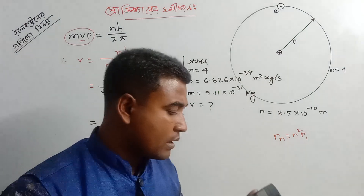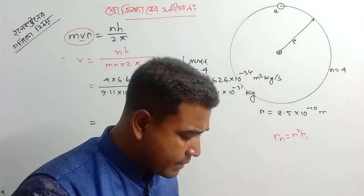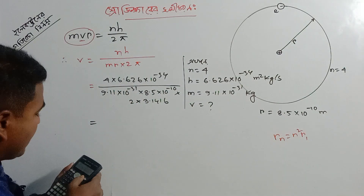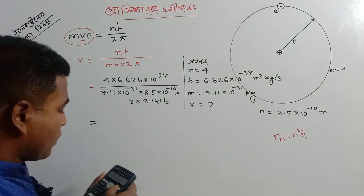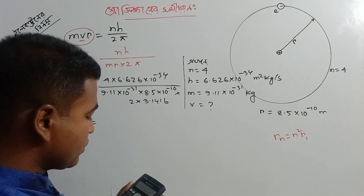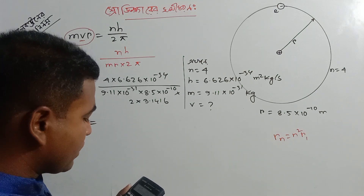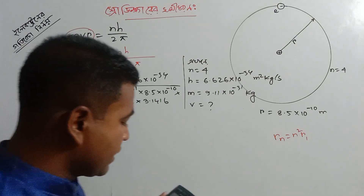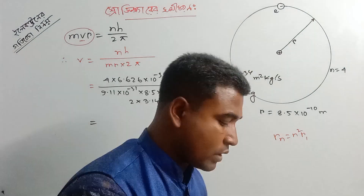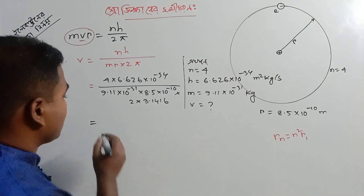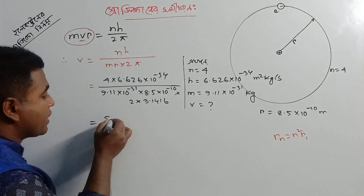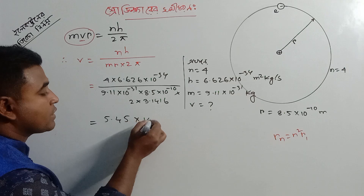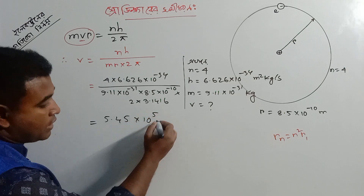The result is 5.45 into 10 to the power 5.